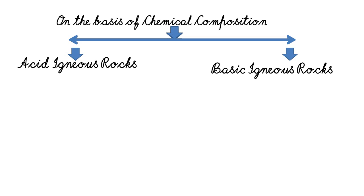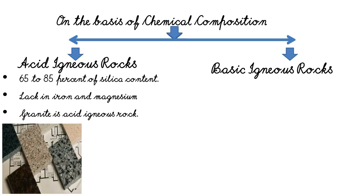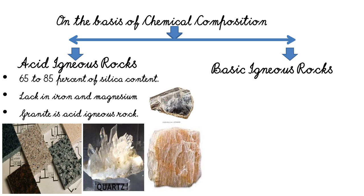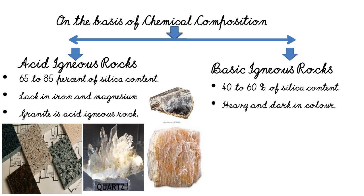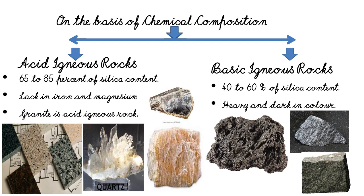On the basis of chemical composition, igneous rocks are classified into acid igneous rocks and basic igneous rocks. Acid igneous rocks have a silica content between 65 to 85 percent and generally lack iron and magnesium. Granite is an acid igneous rock made up of large crystals of quartz, feldspar, and mica, and is commonly used as a building material. Basic igneous rocks have a higher percentage of oxides of denser elements and silica content varies between 40 to 60 percent — they are heavy and dark in color. Basalt, dolerite, and gabbro are typical types of this group. Igneous rocks are usually compact and are of interest to builders and sculptors, and may also be associated with ores of metals.